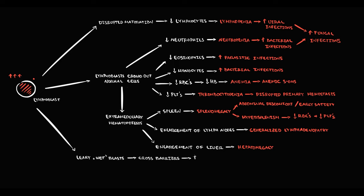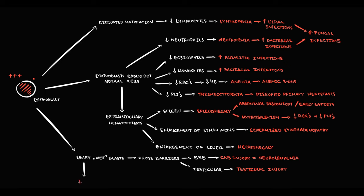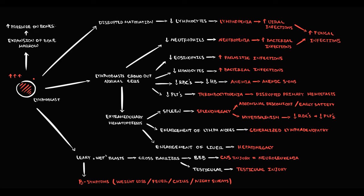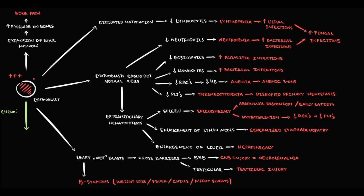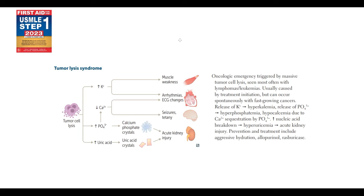Malignant lymphoblasts have a signature feature — they are called leaky or wet blasts because they can easily cross through various barriers. If they cross the blood-brain barrier, this causes CNS injury, called neuro-leukemia. Lymphoblasts can also cross the testicular barrier, infiltrating the testes. Additionally, the massive amount of blast cells produces large quantities of cytokines causing B symptoms: weight loss, fever, chills, and night sweats. Blast cells in the bone marrow also put great pressure on bone tissue, sometimes manifesting as bone pain.